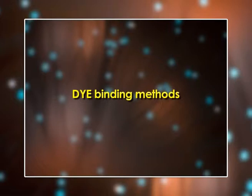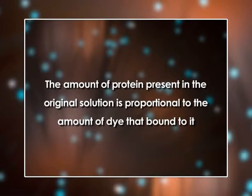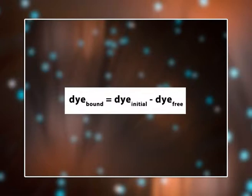Third, dye binding methods: an unknown excess of negatively charged dye is added to a protein solution whose pH is adjusted so that the proteins are positively charged. The proteins form an insoluble complex with the dye due to electrostatic attraction, while the unbound dye remains soluble. The anionic dye binds to the cationic groups of basic amino acid residues and to free amino-terminal groups. The amount of unbound dye remaining after the insoluble protein-dye complex is removed — for example by centrifugation — is determined by measuring its absorbance. Dye bound = dye initial − dye free.